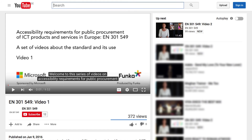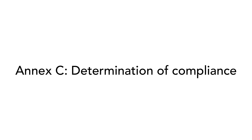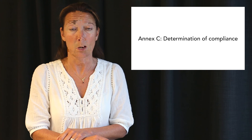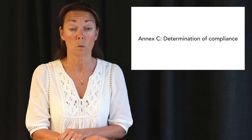We have now gone through all the chapters of EN 301 549. There is one video for each chapter if you want more details. Not all requirements are relevant in all procurement situations, so you need to pick the requirements that apply to your situation. The standard also contains three annexes to help you understand the requirements. In Annex C, you will find information on how to verify compliance with the requirements. Note that this annex is quite complex and that actual testing requires a lot of skills and experience. Like every other profession, you need training and experience to work with accessibility, and if you don't have that, you need to involve experts.